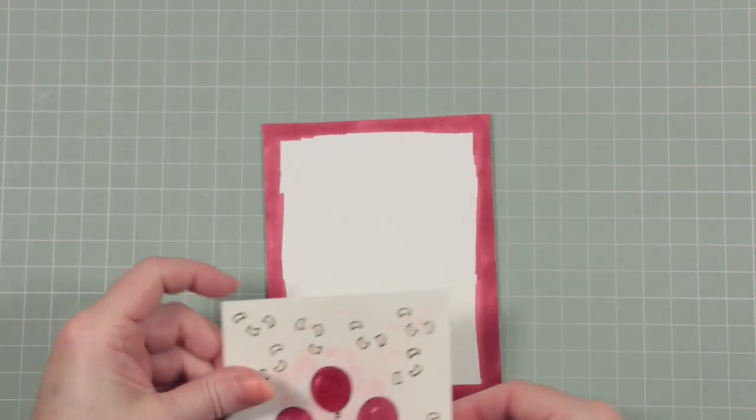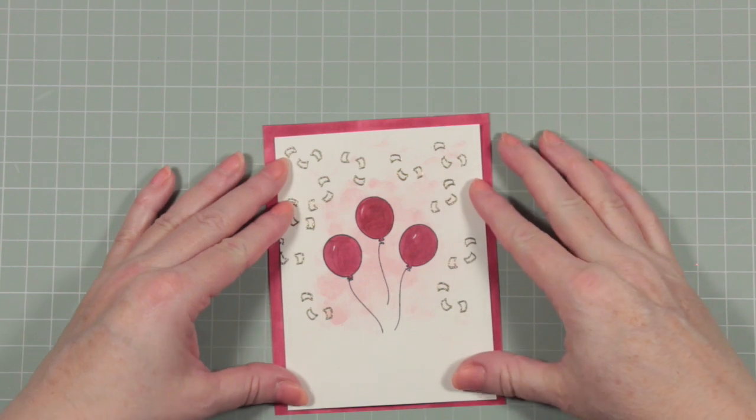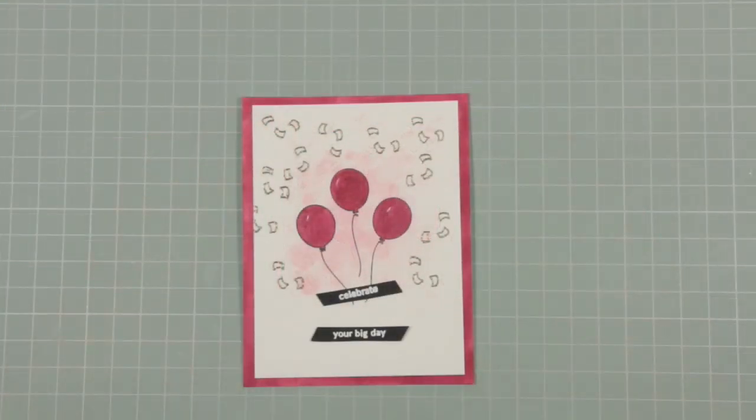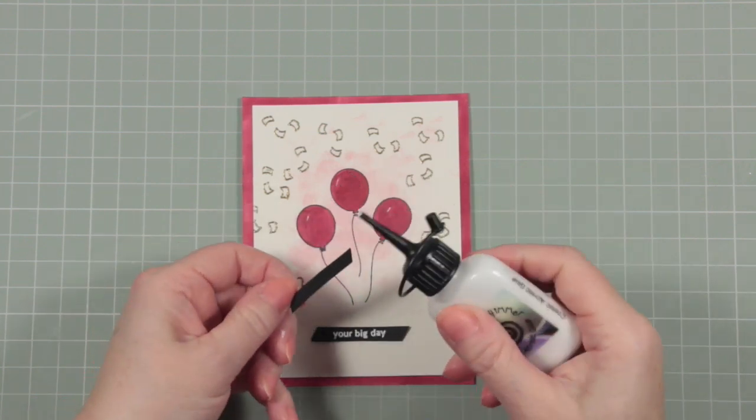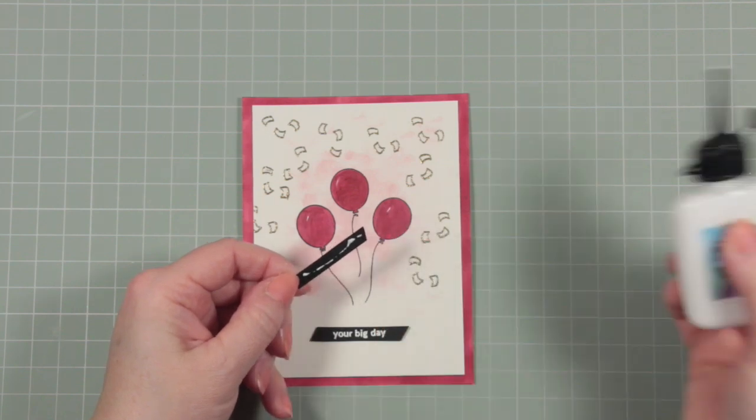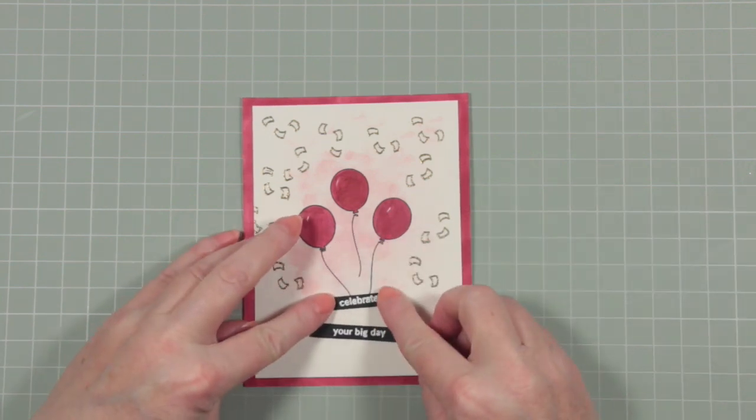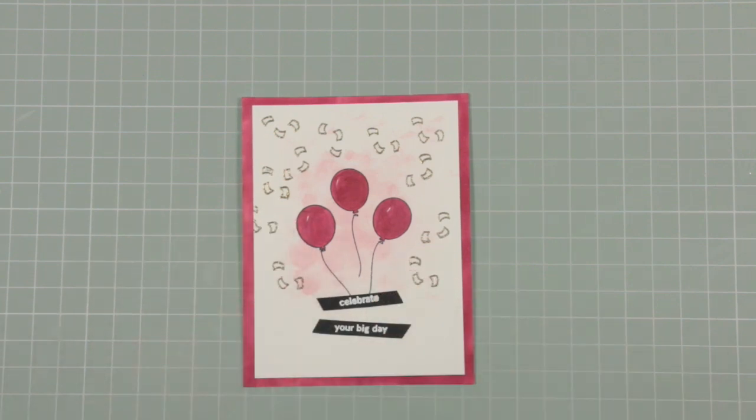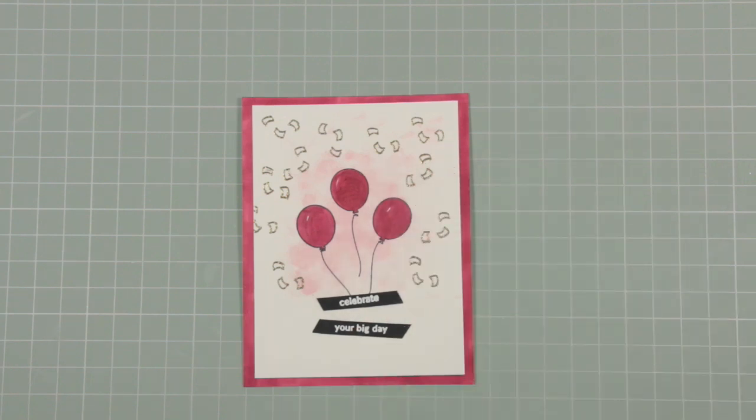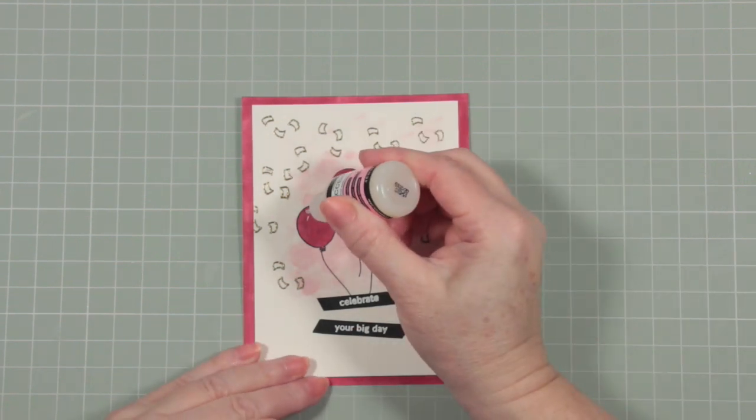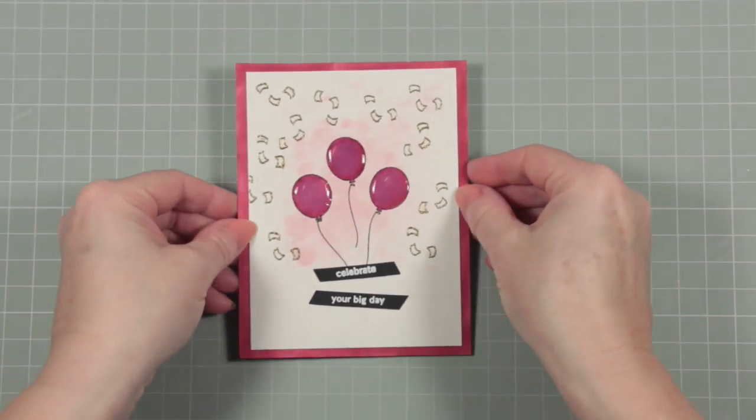You might notice I added some extra stamping sneakily when you weren't looking. To assemble the card, we put the balloon design on top of the red colored background and add some sentiments. I used two from the kit that read Celebrate and Your Big Day. I put them onto black card and heat embossed them with white embossing powder. Then I cut them out into thin strips and chopped a little bit off the end of each edge to give it a slightly different angle. If you happen to have glossy accents in your stash, this will complete your balloons beautifully. Dab it onto them, cover them with it and leave them to dry. It will make your finished card look wonderfully balloon-y.